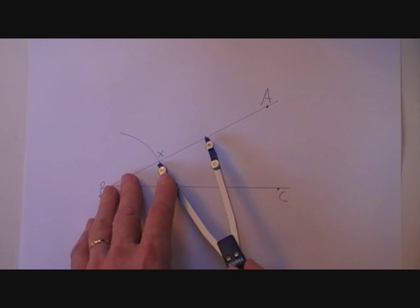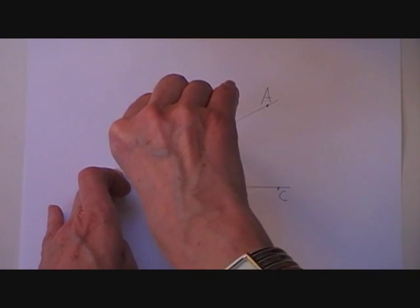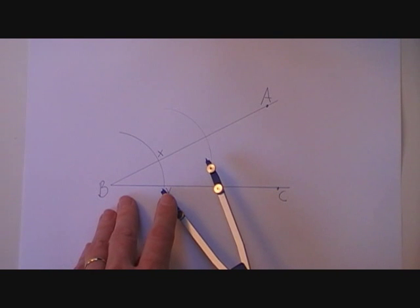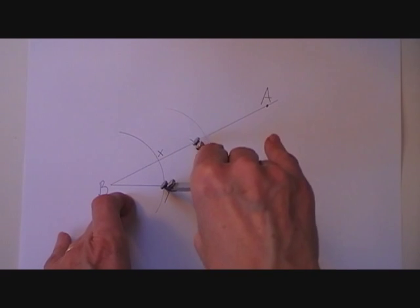I put the point of the compass on X and spin around and draw another arc. Put the point of the compass on Y and spin around and draw a third arc.